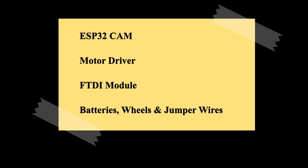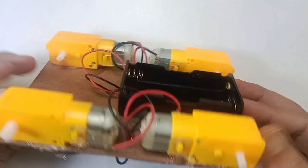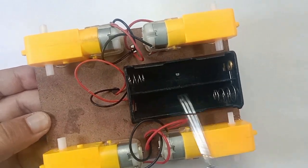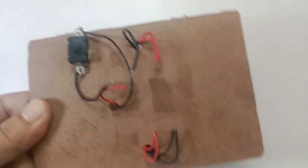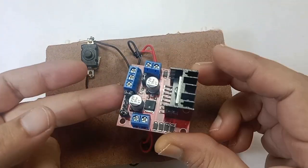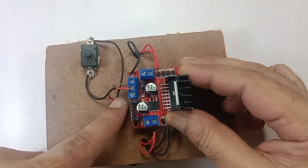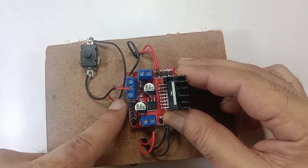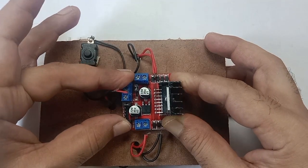To build the project, you have the list of components which is on the screen. I have this chassis ready — I made a couple of videos where I use this chassis. I'm using four wheels; you can use three, like two plus one if you want. I'm also using two batteries.